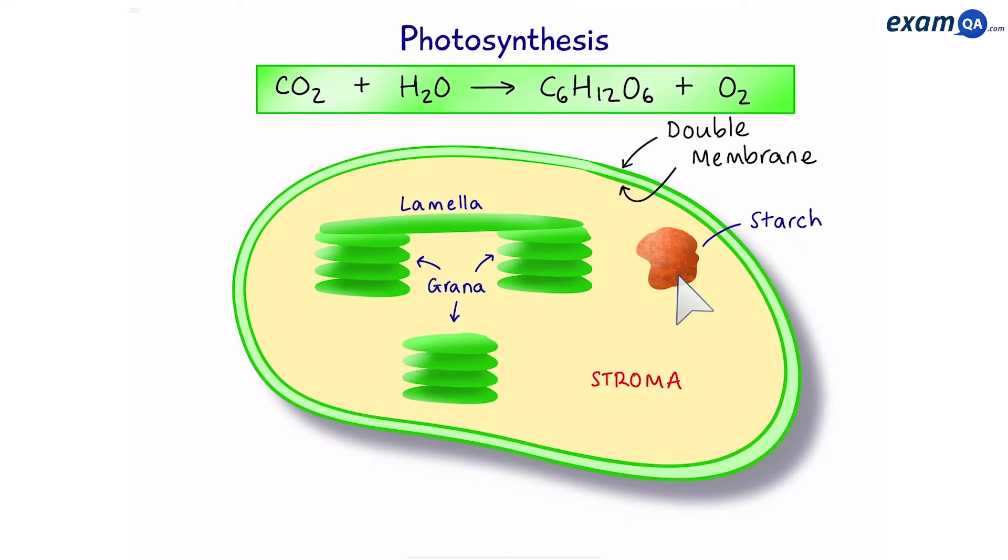Okay, now photosynthesis happens according to this equation. Carbon dioxide reacts with water to form glucose and oxygen. However, this happens in two stages.